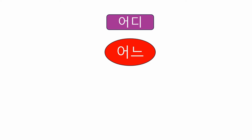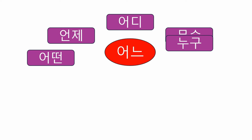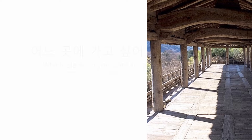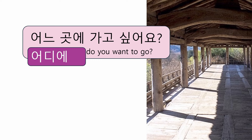So let's think about replacement of question words. Depending on the context, you can replace 어느 with other question words such as 어디, 언제, 무슨, 어떤, or 누구. For example, after suggesting a few tourist spots in Korea to your parents, you can ask: 어느 곳에 가고 싶어요? — Which place do you want to go? This can also be asked using 어디: 어디에 가고 싶어요? — Where do you want to go?